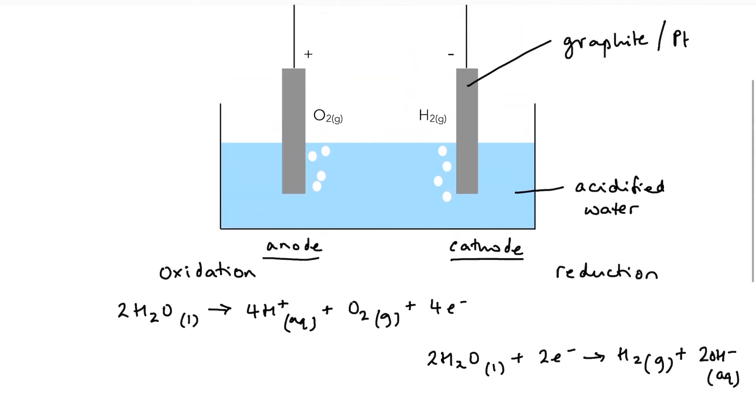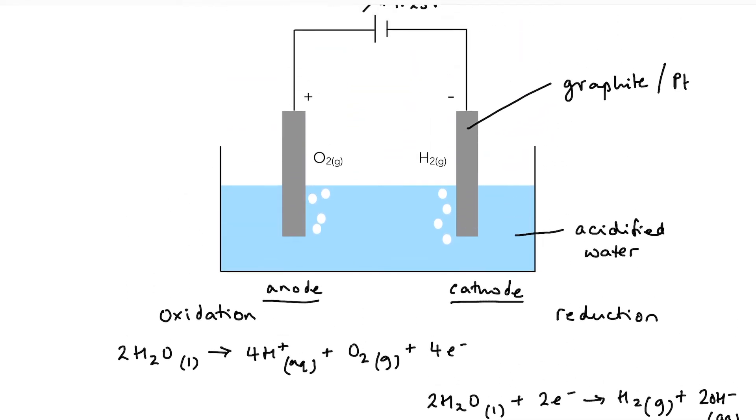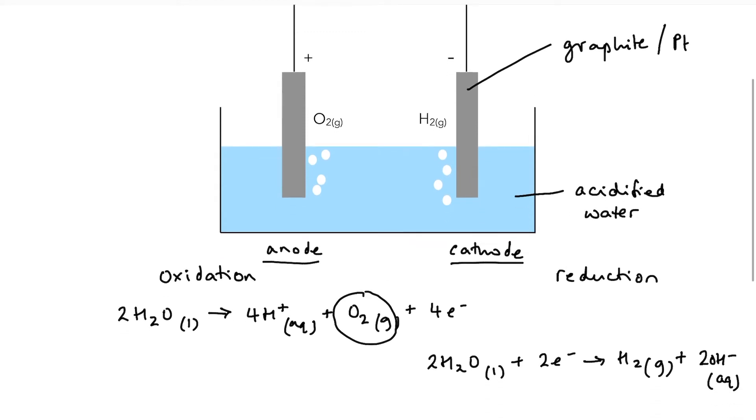So electrolysis of water, acidified water, is going to produce oxygen at the anode and hydrogen at the cathode.